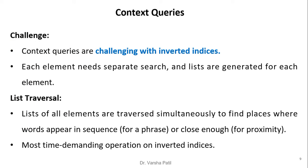Context queries are challenging with inverted indices. Each element needs a separate search and its occurrence list is generated. After retrieving word occurrences from the vocabulary, additional processing is required to determine which documents satisfy the positional condition. Lists of all elements are traversed simultaneously to find places where words appear in sequence or close together, making this the most time-demanding operation on inverted indices.